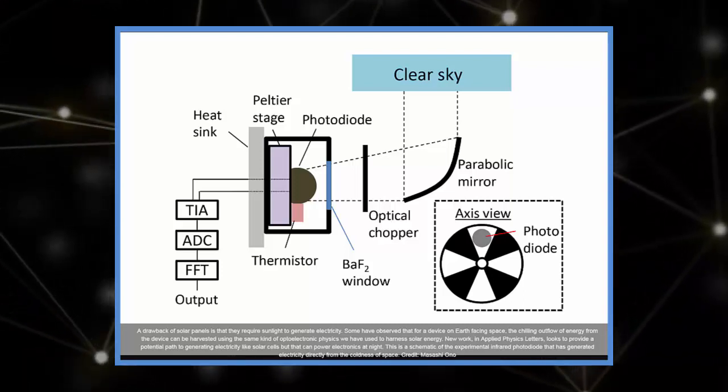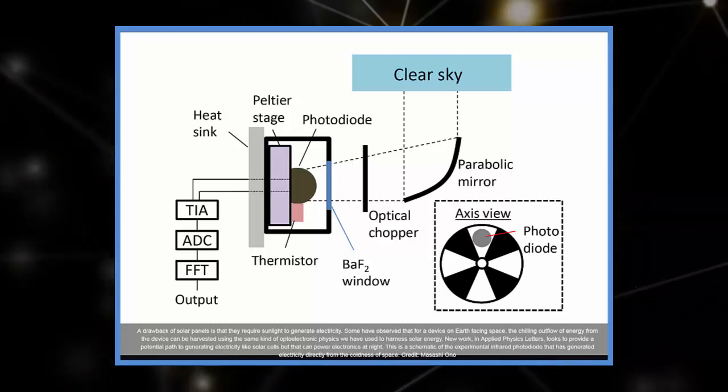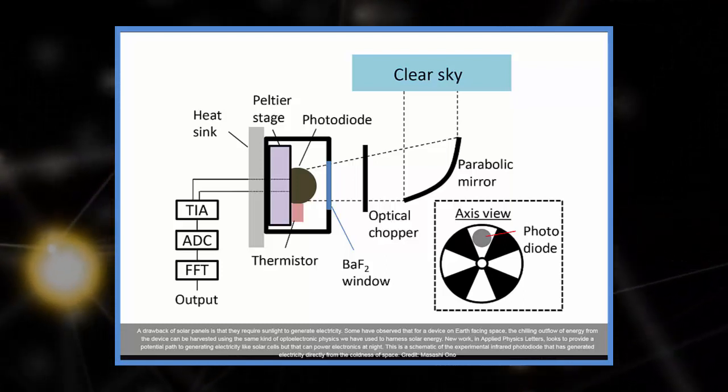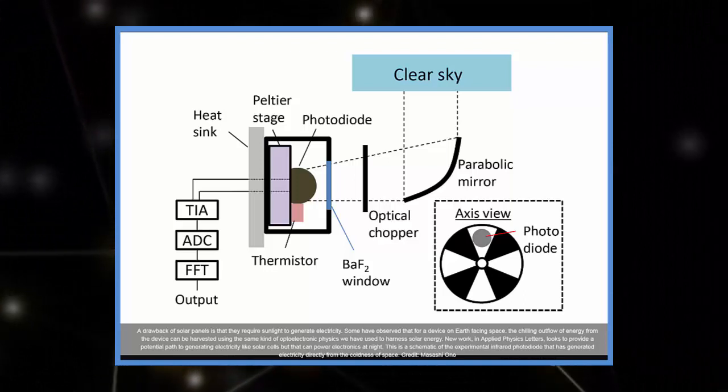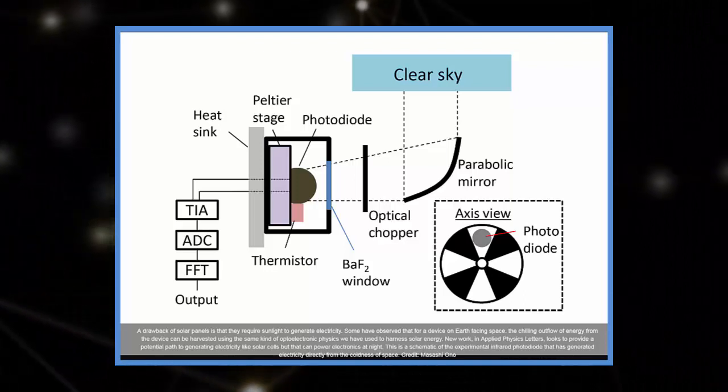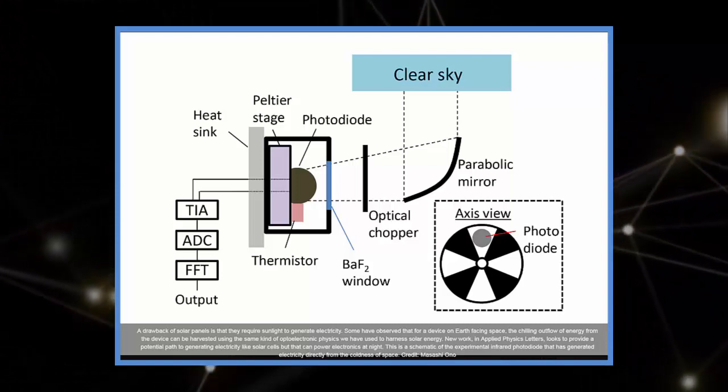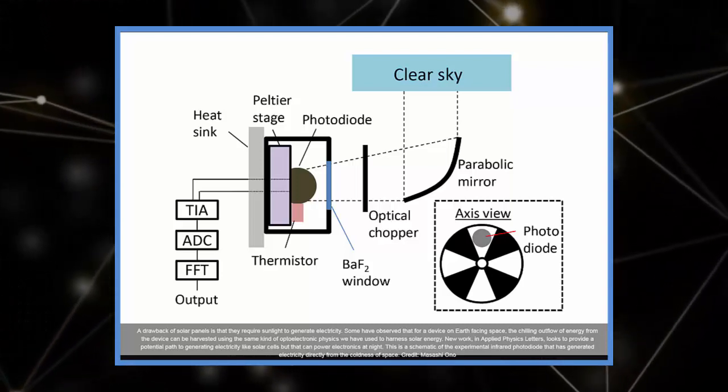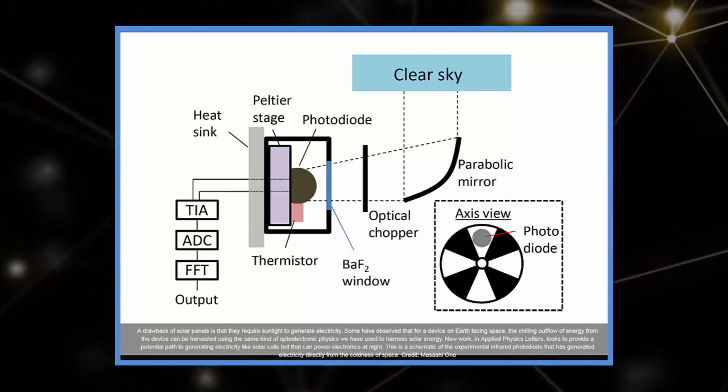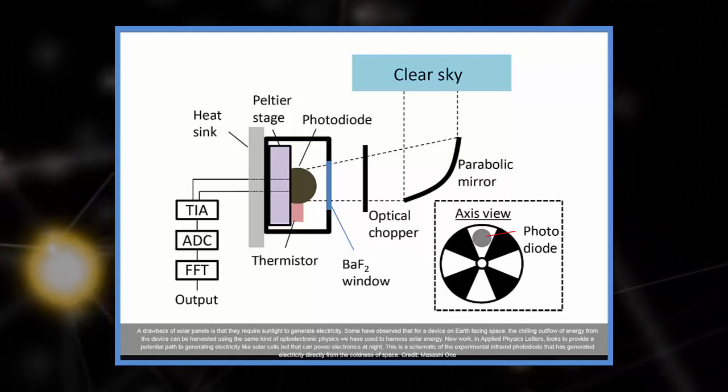New work in a recent issue of Applied Physics Letters looks to provide a potential path to generating electricity like solar cells but that can power electronics at night. An international team of scientists has demonstrated for the first time that it is possible to generate a measurable amount of electricity in a diode directly from the coldness of the universe. The infrared semiconductor device faces the sky and uses the temperature difference between Earth and space to produce the electricity.